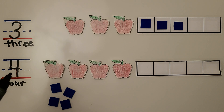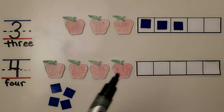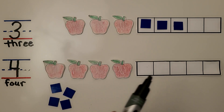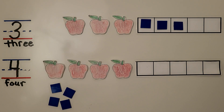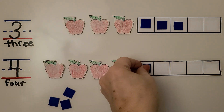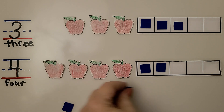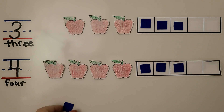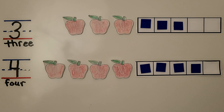Here we have the number 4 and the word 4. We can put a counter for each of the 4 apples into the 5-frame. We have 1, 2, 3, 4 apples. We put 1, 2, 3, 4 counters into the 5-frame.